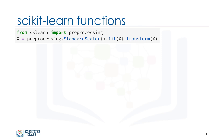If there are some outliers or different-scale fields in your dataset, you have to fix them. The pre-processing package of Scikit-learn provides several common utility functions and transformer classes to change raw feature vectors into a suitable form of vector for modeling.